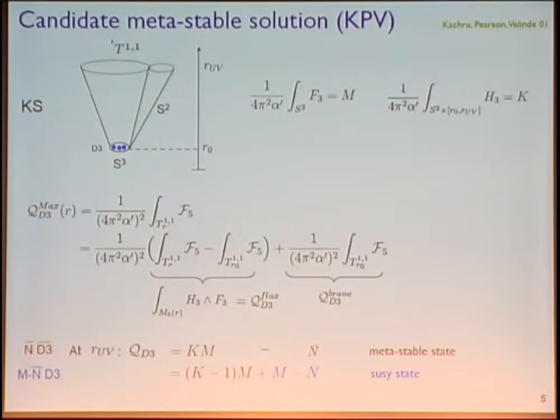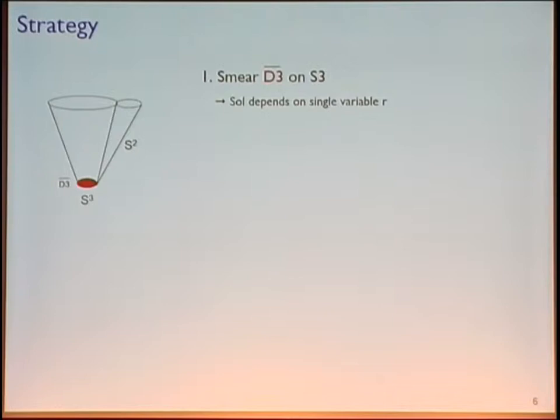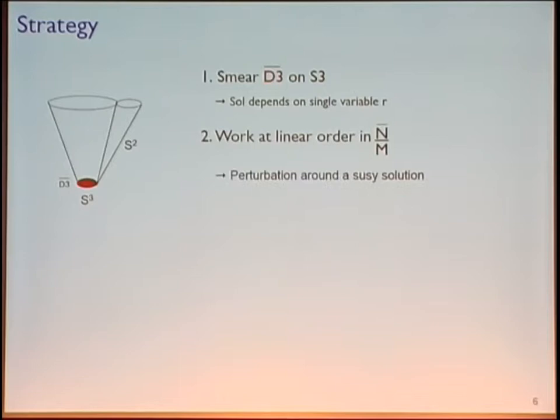What is our strategy to solve this problem? First, we smear the anti-D3 branes on S3, so instead of localized branes we consider a smeared distribution. This means the solution depends on a single variable, R. Then we work at linear order in N-bar over M, where N-bar is the number of anti-D3 branes and M is the number of units of three-form flux. This means we are doing perturbation theory around the supersymmetric solution.